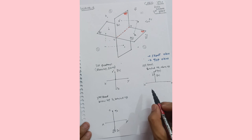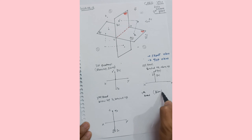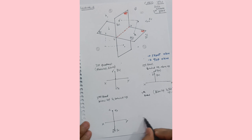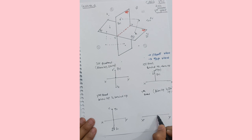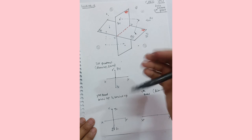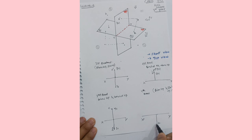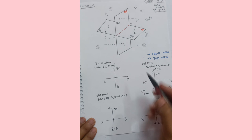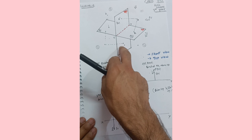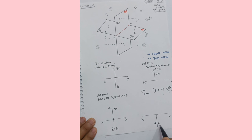Fourth quadrant: terminologies are below HP and in front of VP. I draw the XY reference plane. The front view projects onto the vertical plane below, so I label it D-dash. When rotating the horizontal plane, the top view also falls on the same side as the front view. So I draw D on the same lower side. Both front view and top view end up below the XY line.